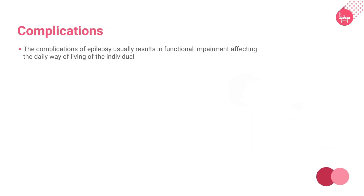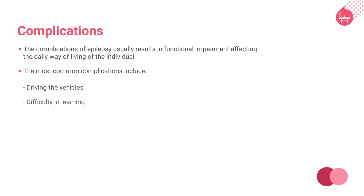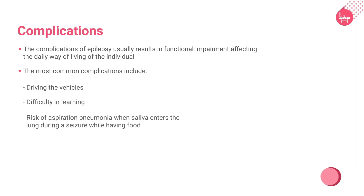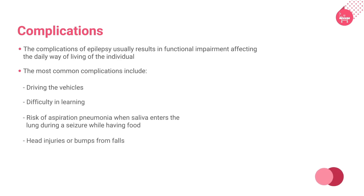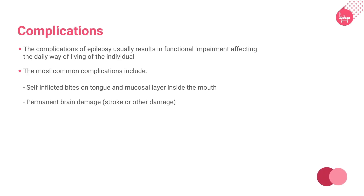The complications of epilepsy usually result in functional impairment affecting the daily way of living of the individual. The most common complications include difficulty in driving vehicles, difficulty in learning, risk of aspiration pneumonia when saliva enters the lung during a seizure while having food, head injuries or bumps from falls, self-inflicted bites on the tongue and mucosal layer inside the mouth, permanent brain damage, stroke or other damage, and side effects of medicines.